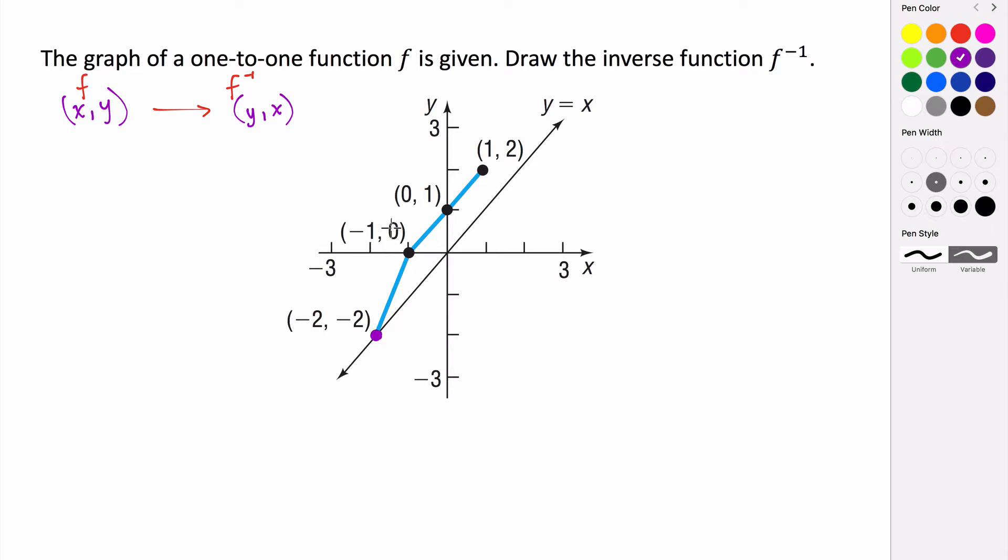(-1, 0), if I swap that, will be (0, -1). So (0, -1) will be down here. That's going to be a point on the inverse.